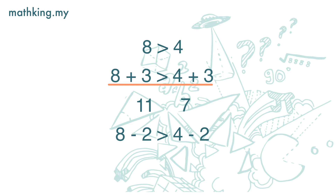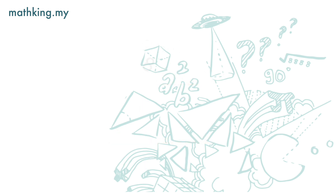If we subtract 2 from both the left-hand side and the right-hand side, then the left-hand side is 6 and the right-hand side is 2. So 8 minus 2 is greater than 4 minus 2 — this still holds true.